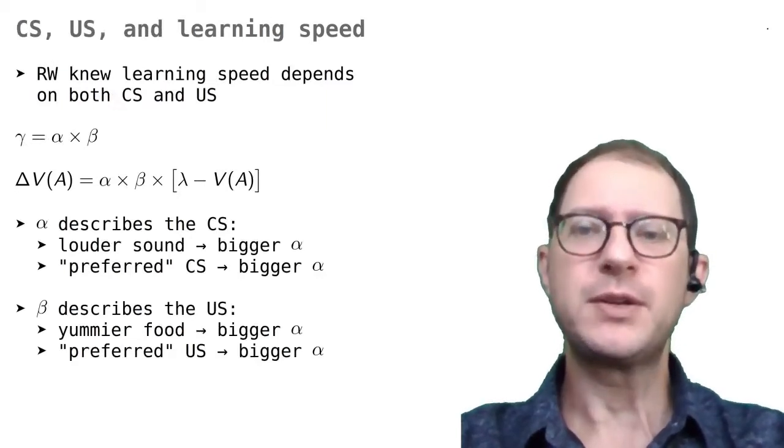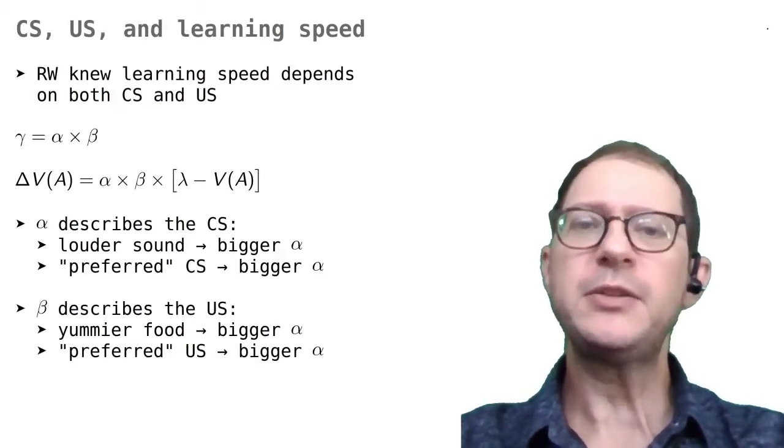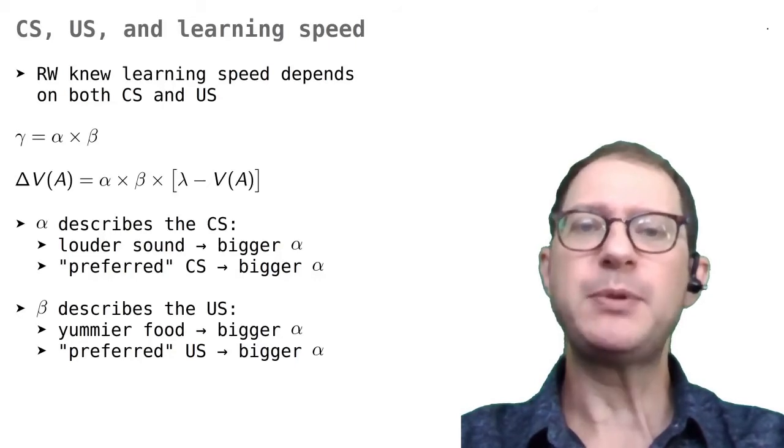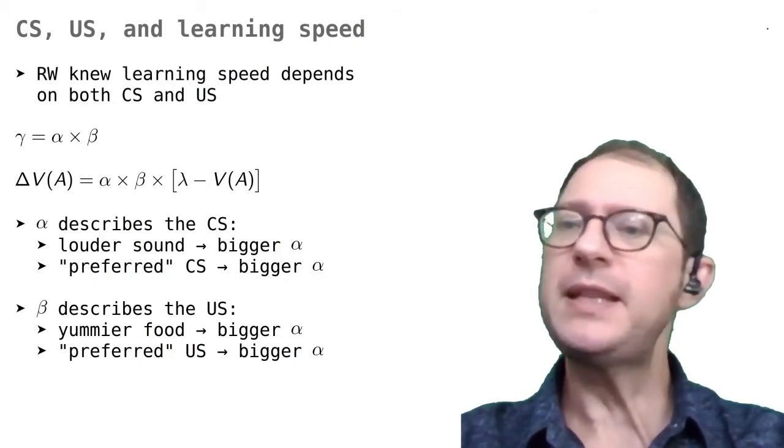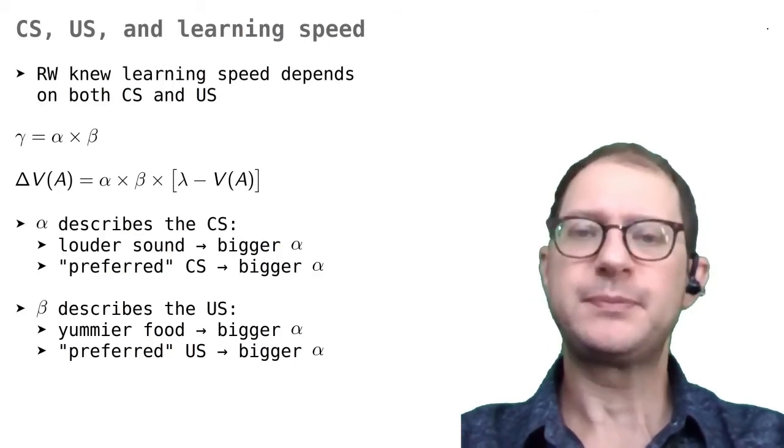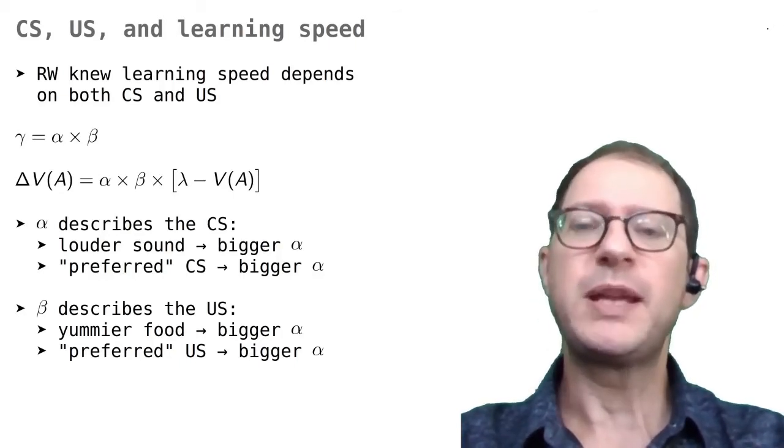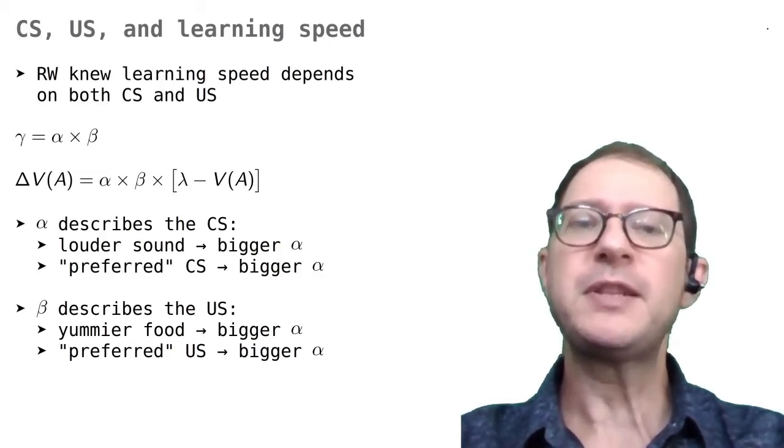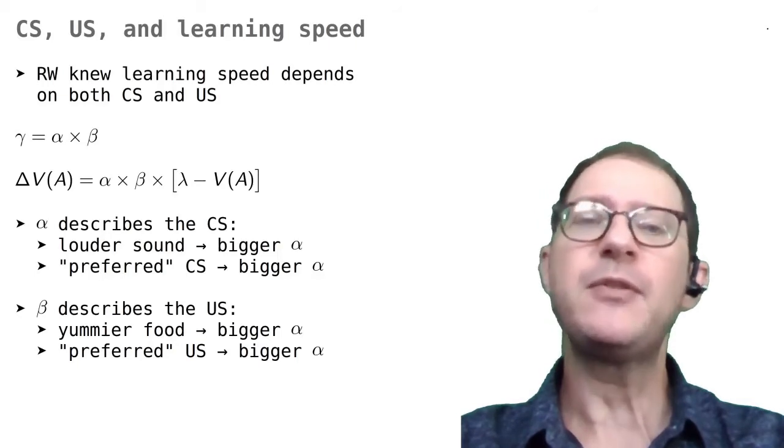Now, when they introduced their theory, Rescola-Wagner did not write gamma. Instead, they used two numbers, which they called alpha and beta. The number gamma that we have been using up to now would be the product of RW's alpha and beta, as indicated in this formula. RW did not do this to complicate your life. They used two numbers, instead of one, because they knew that learning speed depends on characteristics of the CS and of the US.